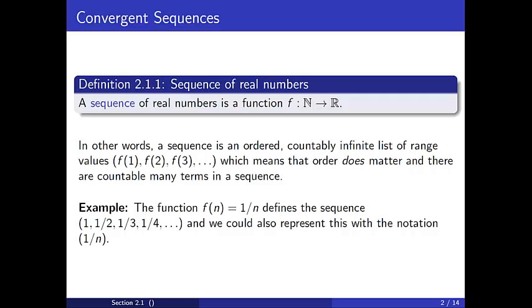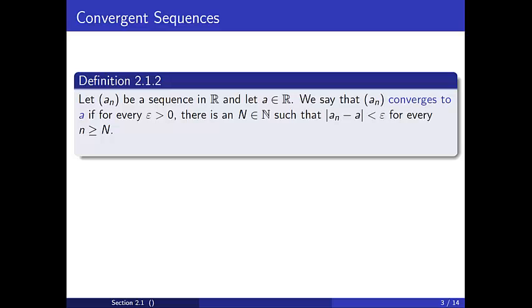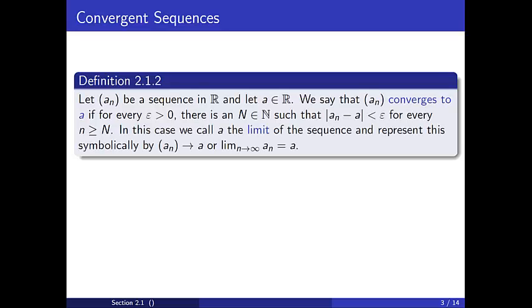We are now ready to explore the definition of a convergent sequence. Let a_n be a sequence of real numbers and let a be a real number. We say that the sequence a_n converges to a if for every positive real number epsilon there is a natural number N such that the distance between a_n and a is less than epsilon whenever n is greater than or equal to N. When this happens, we call a the limit of the sequence a_n and represent this symbolically with either the arrow notation or the limit notation.